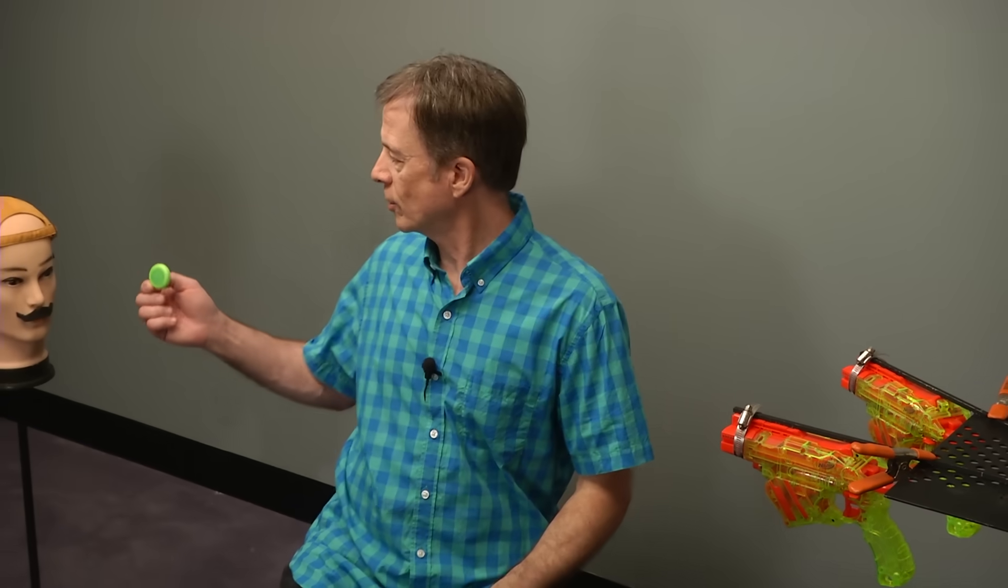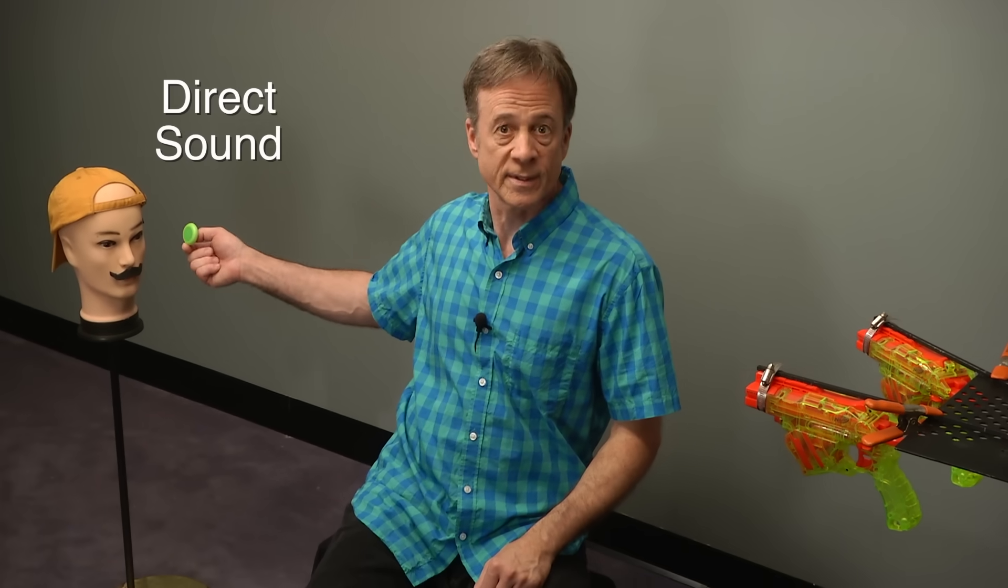Most rooms have flat walls and flat ceilings, and sound bounces off of these. So how does that affect the sound? I'll use these two Nerf guns to demonstrate. I've got this one aimed so this disc goes directly to the ear. That represents direct sound.